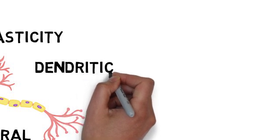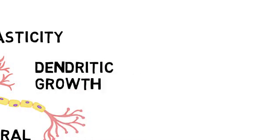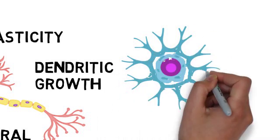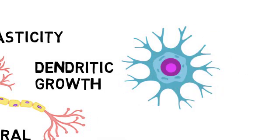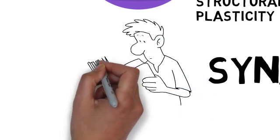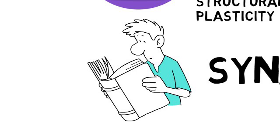Dendrites are the branching extensions of neurons that receive signals from other neurons. Experiences, learning, and environmental stimuli can promote dendritic growth, increasing the number of synaptic connections and enhancing communication between neurons.